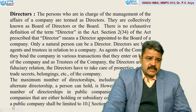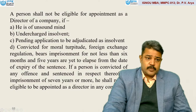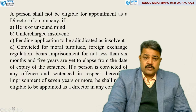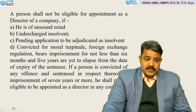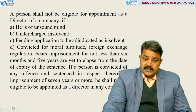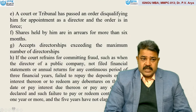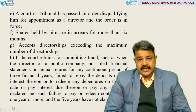Directors have certain qualifications — he should not be of unsound mind, undischarged insolvent, pending application to be adjudicated insolvent, convicted for violations of foreign exchange regulations with imprisonment for not less than six months and five years yet to elapse from the date of expiry of the sentence. If a person is convicted of any offense and sentenced to imprisonment of seven years or more, he shall not be eligible to be appointed as a director in any company. A court or tribunal may pass an order disqualifying him for appointment as a director.